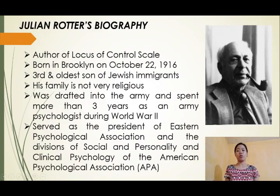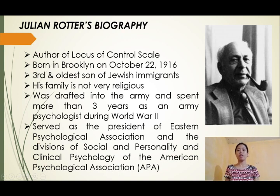Biography of Rotter. He is the author of the Locus of Control Scale, born in Brooklyn on October 22, 1916, and the third and oldest son of Jewish emigrants. His family was not very religious. He was drafted into the army and spent more than three years as an army psychologist during World War II, and served as president of the Eastern Psychological Association and the Divisions of Social and Personality and Clinical Psychology of the American Psychological Association.